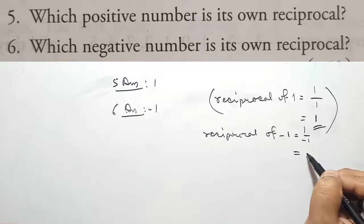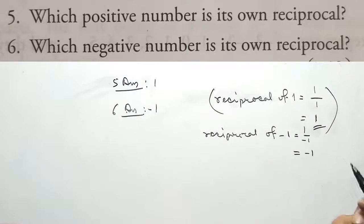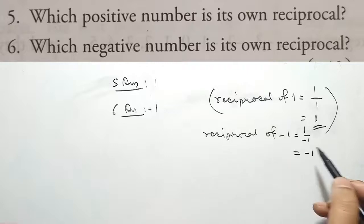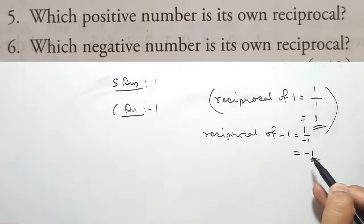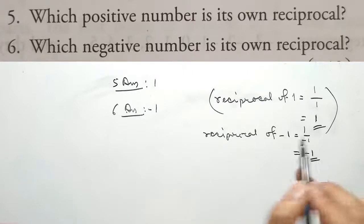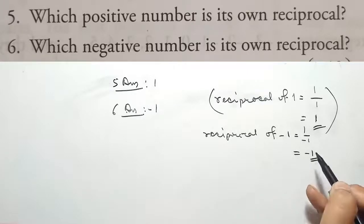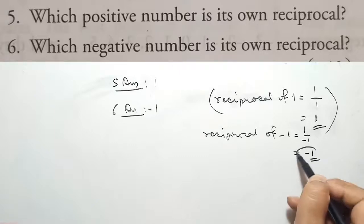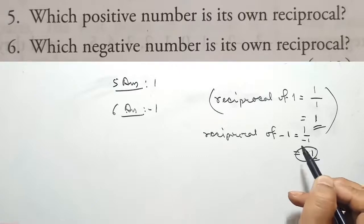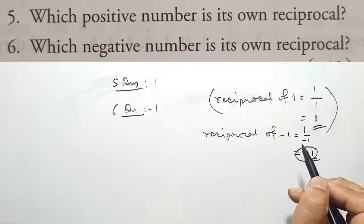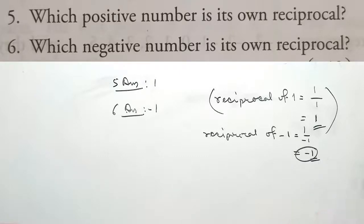Therefore, the answer is minus 1. If we find the reciprocal of minus 1, the answer remains minus 1. This is why the reciprocal of its own reciprocal stays the same.